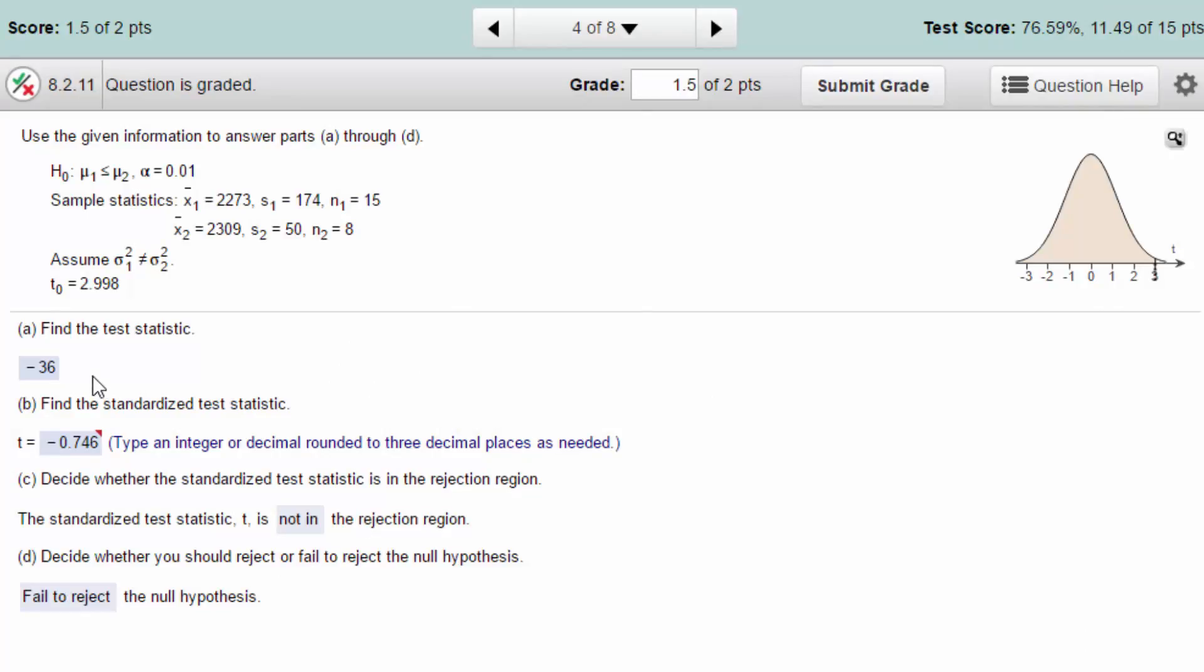The test statistic is pretty straightforward. That's just mu 1 minus mu 2, or x bar 1 minus x bar 2, and that gives you minus 36, which this student got correctly. But this student missed the standardized test statistic. This student answered minus 0.567, and I'll show you how she got that answer and why that answer is wrong when we get over to StatCrunch.